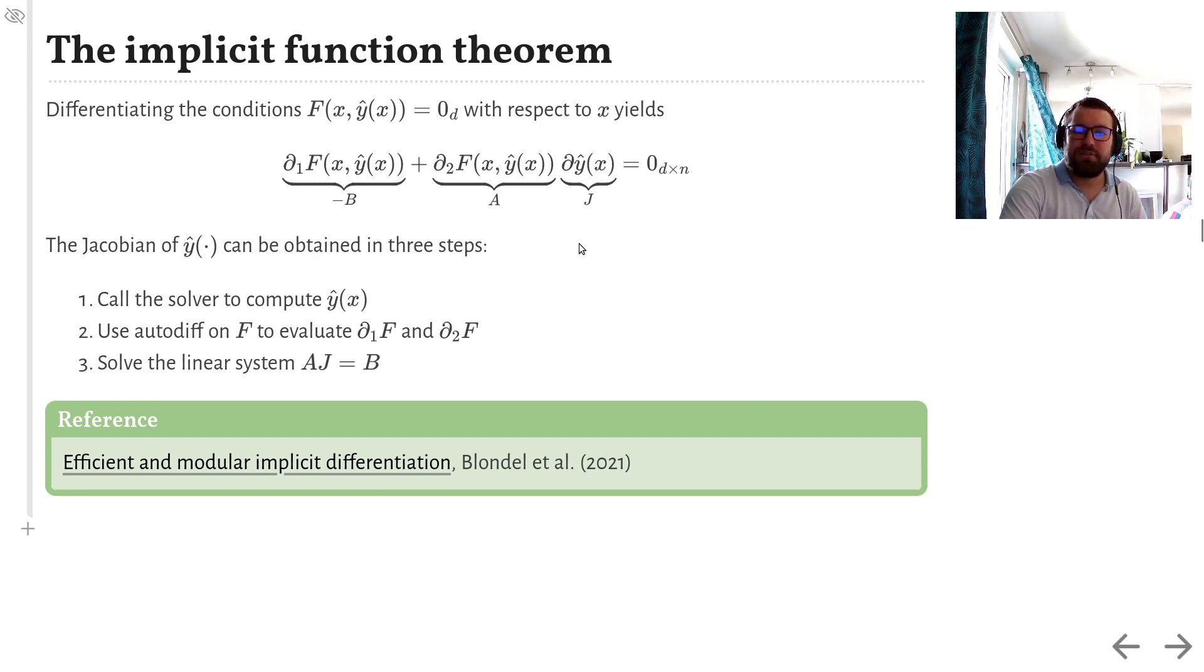Step 1: Call your solver to obtain y of x. Step 2: Use automatic differentiation, but not on the solver, on the conditions f, to evaluate partial Jacobians with respect to the first and second argument, the ones we called A and B. Step 3: Solve the linear system, A J equals B.